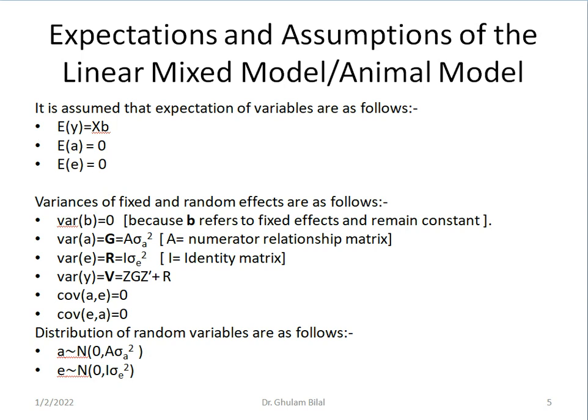Variance of B equals 0 because B refers to fixed effects and remains constant. Variance of additive genetic effect or breeding values is G and it equals A times sigma square A. A stands for numerator relationship matrix and sigma square A is additive genetic variance. Variance of E or residual variance equals R. It is a variance covariance matrix of residuals and equals identity matrix I multiplied by sigma square E, which is residual variance or error variance. Variance of Y equals V which equals ZGZ prime plus R.